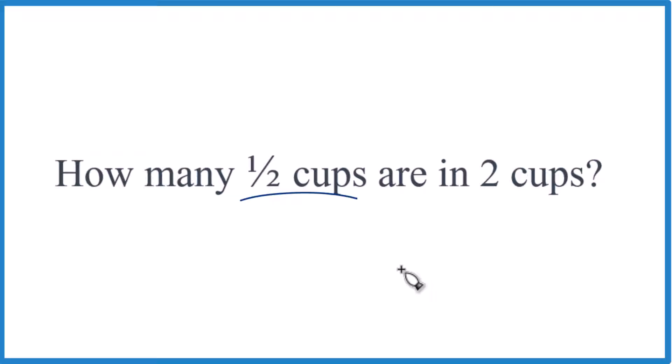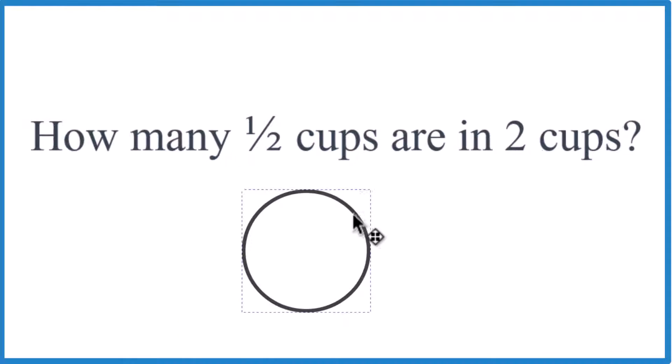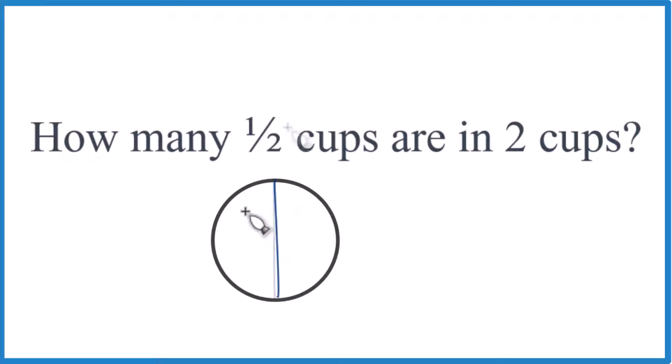So let's think of this visually first. That's a good way to do it. So here's a cup, and we're going to divide it into one-half. So we have one-half and one-half. So in one cup, there are two one-half measures.